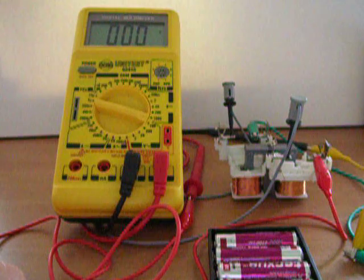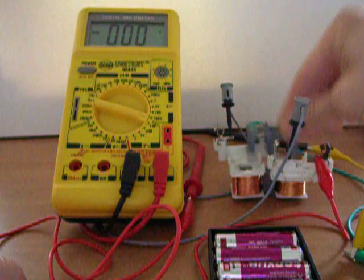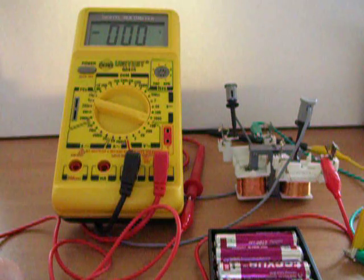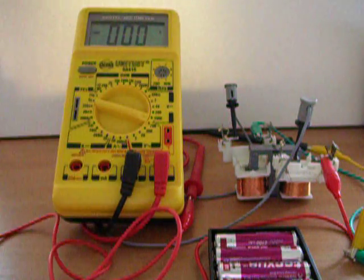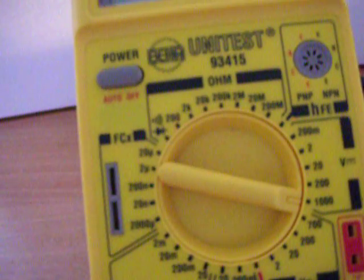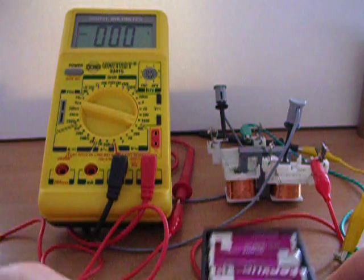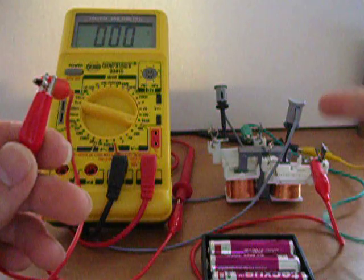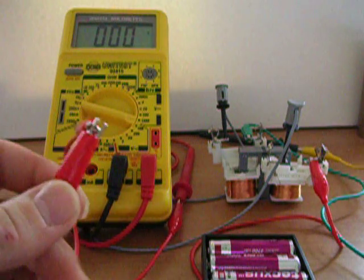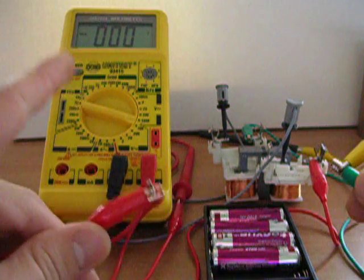This is like a strange transformer here. My meter is on the 1000 volt DC scale, so you can watch this. I'm going to connect my PMH here and make a fast on and offs, and watch the meter.